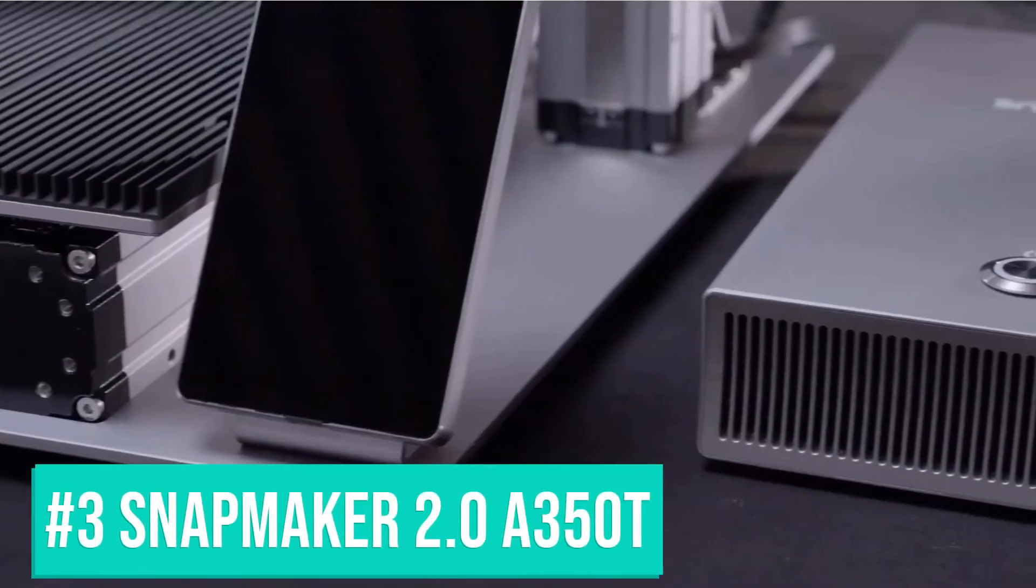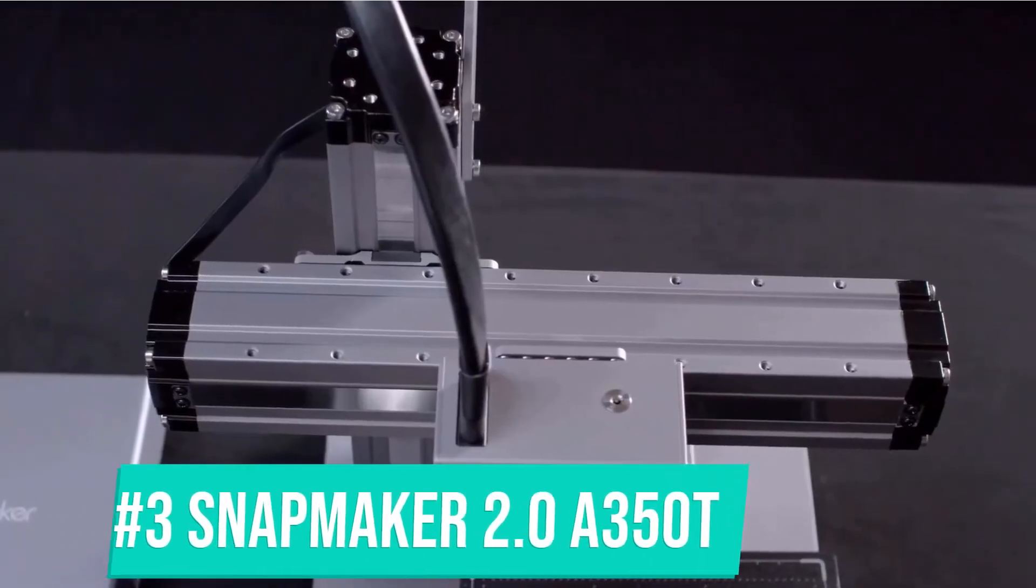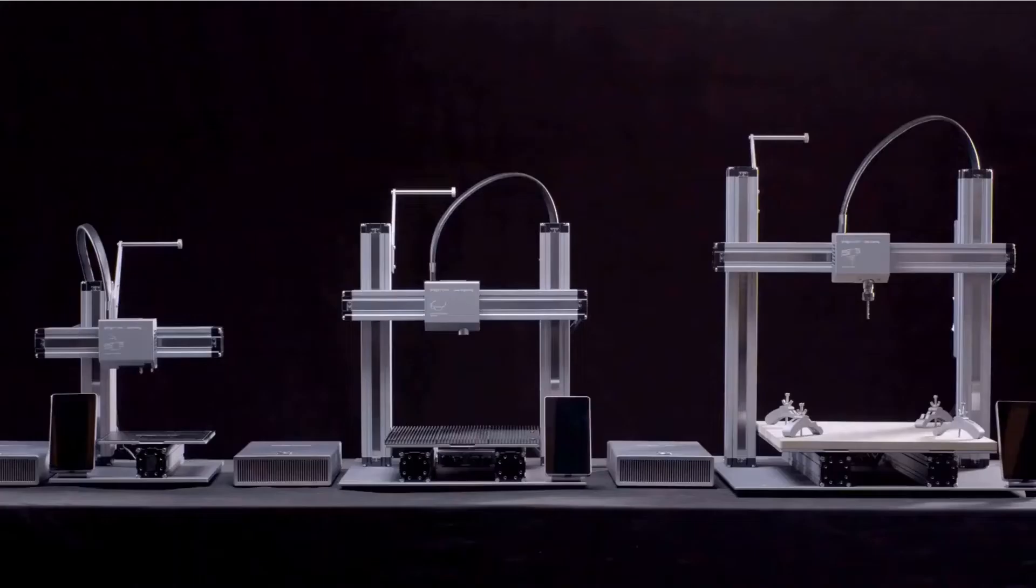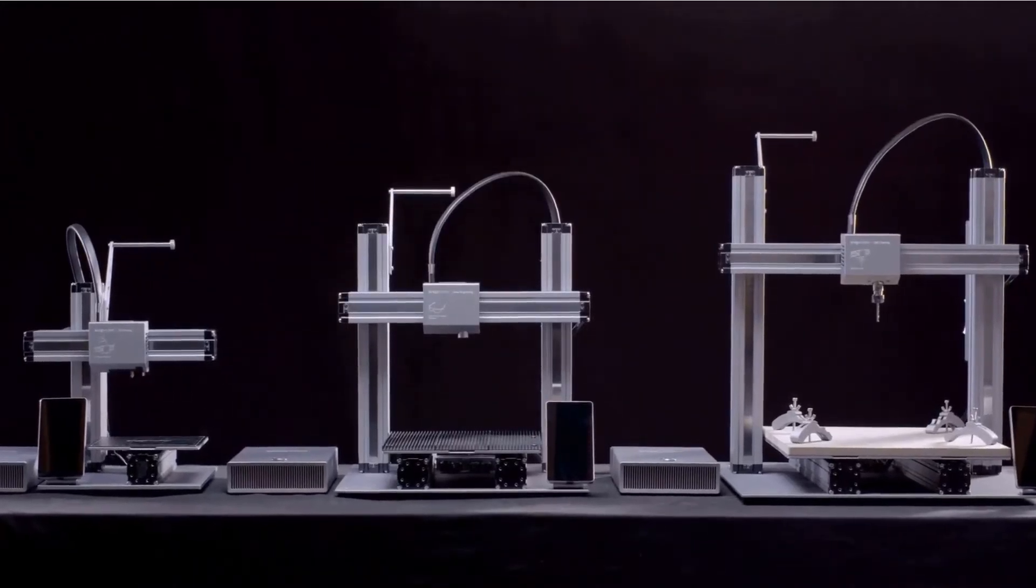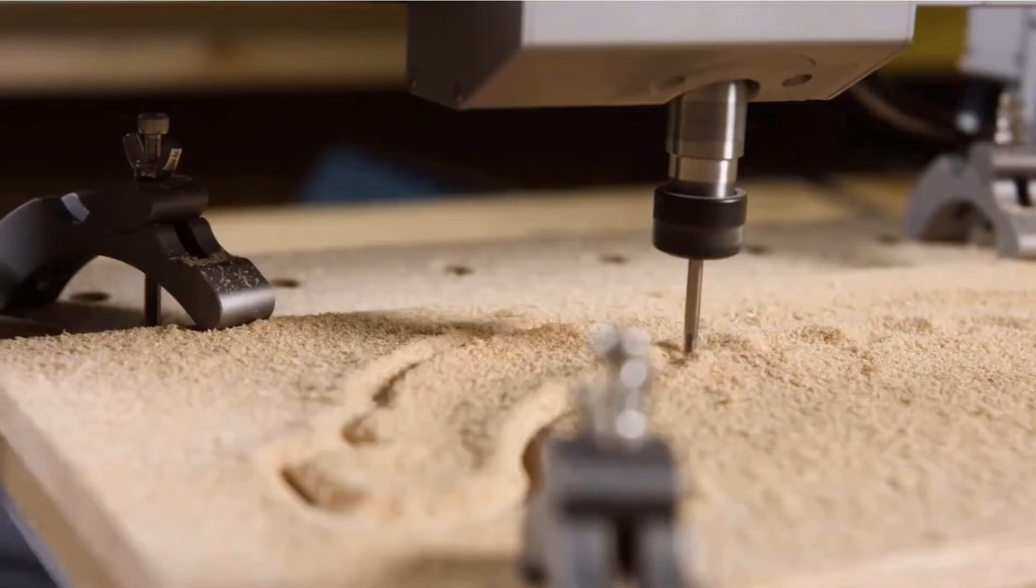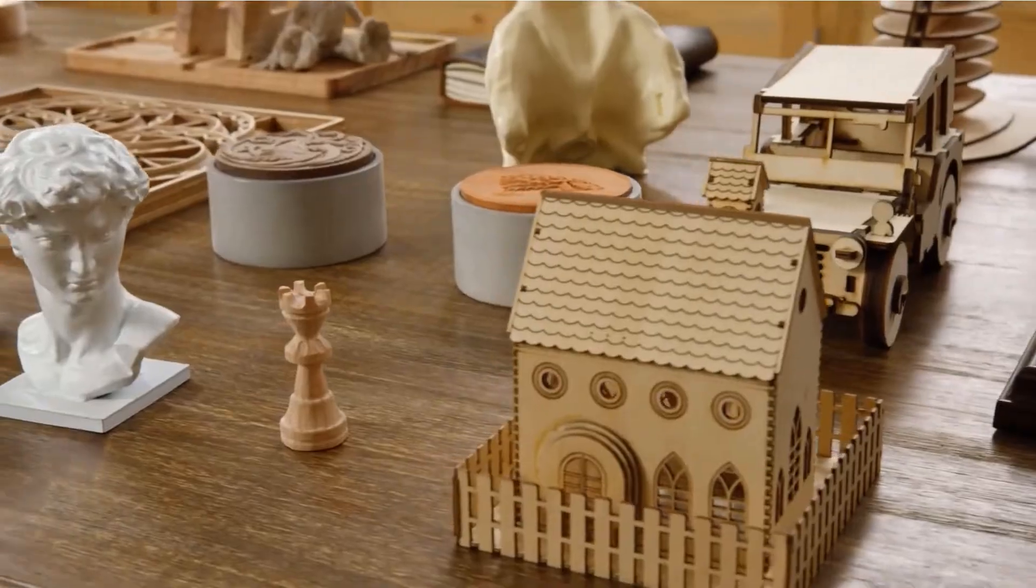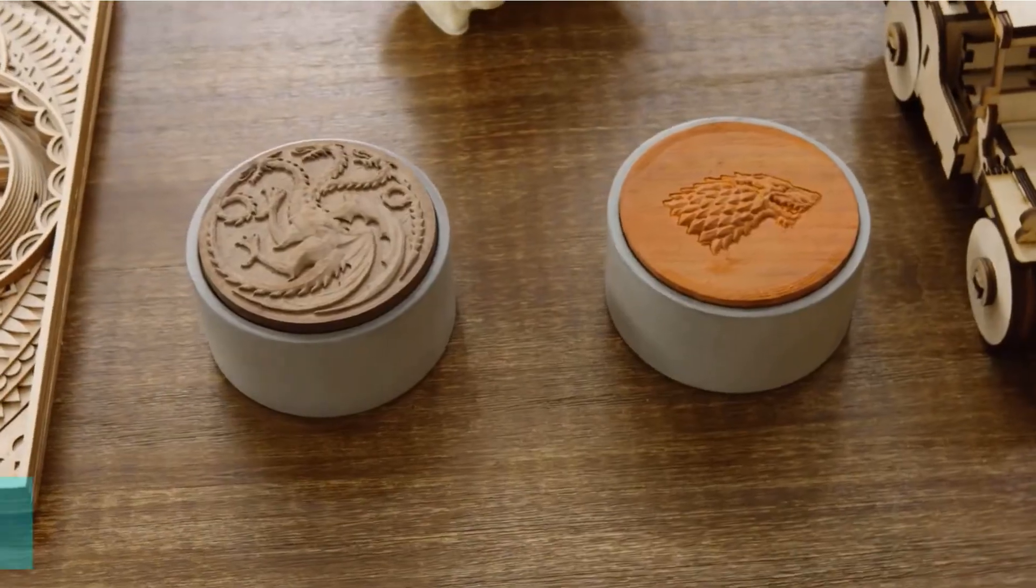The third one on the list is the Snapmaker A350T 3-in-1 3D Printer. The Snapmaker 2.0 Modular 3-in-1 3D Printers (A350T/A250T) unlock your full creative potential, from 3D printing to laser engraving, cutting, and CNC carving.